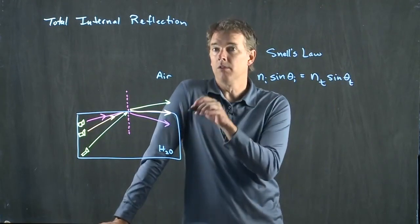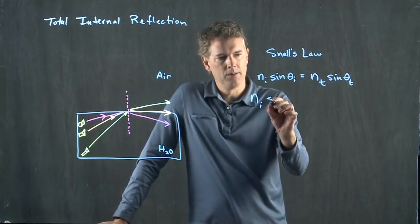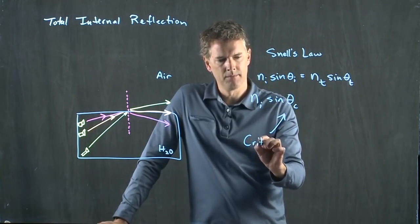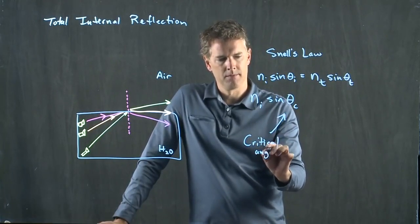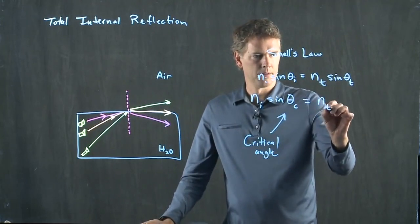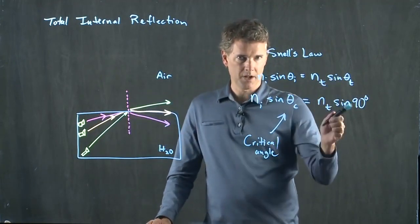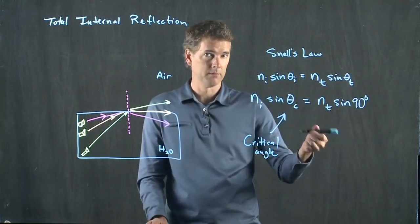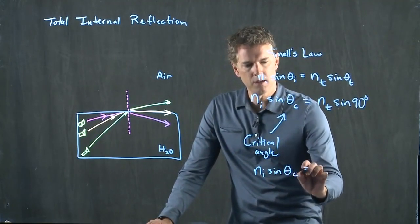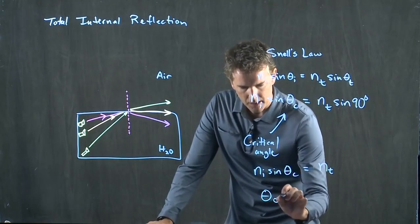Ni in this case was water. Theta i is the incident angle, but at a very special angle called the critical angle, the transmitted ray is at 90 degrees. What is the sine of 90 degrees? Is it zero or is it one? It's one. So we get n i sine theta c equals nt, since we're just multiplying by one.